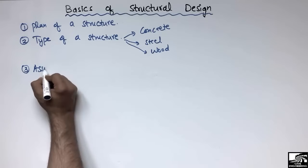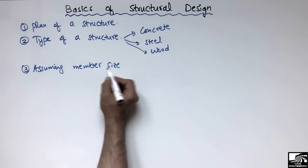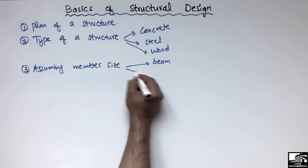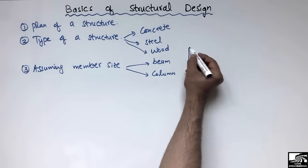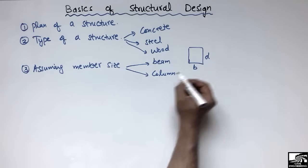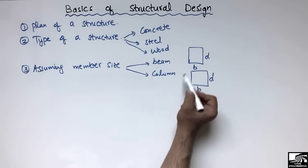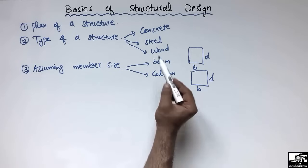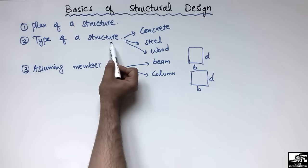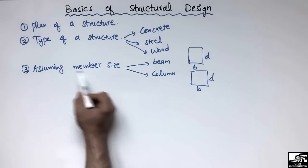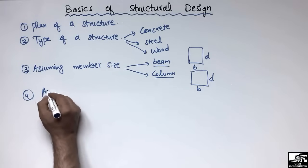The third step is assuming the member size. This includes the beam size and the column size, which are the two important structural elements. The beam size includes the beam width and depth, and the column dimensions include the column width. We start the design by choosing the beam and column dimensions.